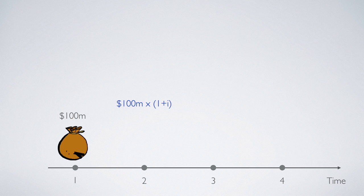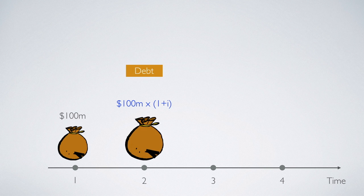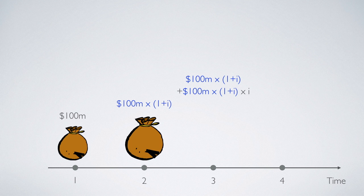So if government decides to dump the debt burden on day 2, government would have to tax the households $100 million times (1 + i). However, if government decides not to tax the household on day 2 — meaning that government will continue to hold the debt for at least another period — then by day 3, government would have to pay back the total principal $100 million times (1 + i), plus extra interest on top of that, which would be $100 million times (1 + i) times the interest rate. Therefore, the total debt balance at the beginning of day 3 would be $100 million times (1 + i)².